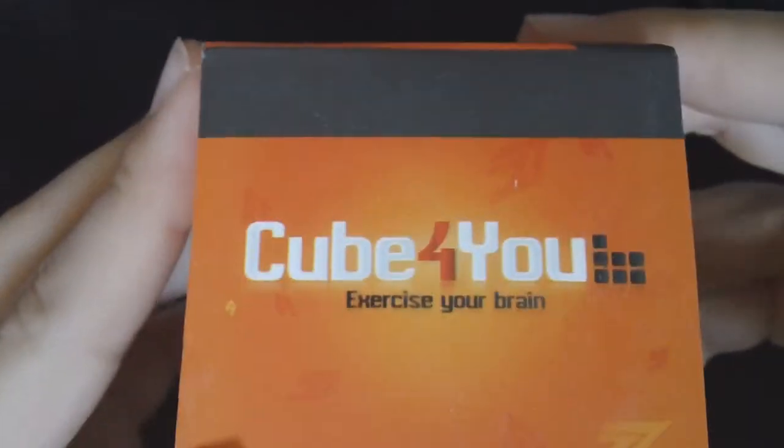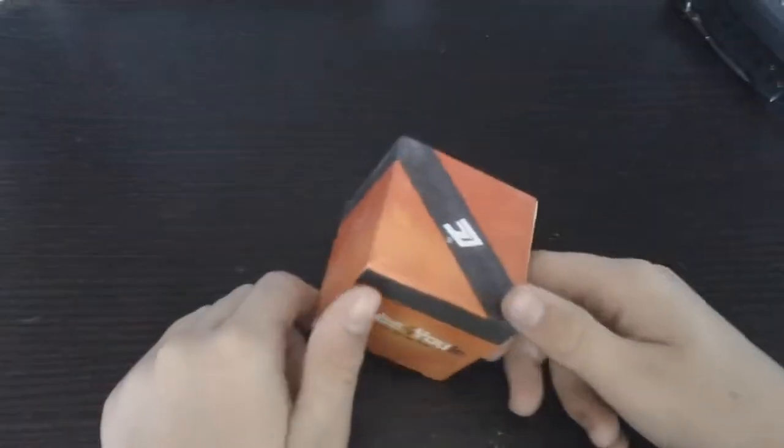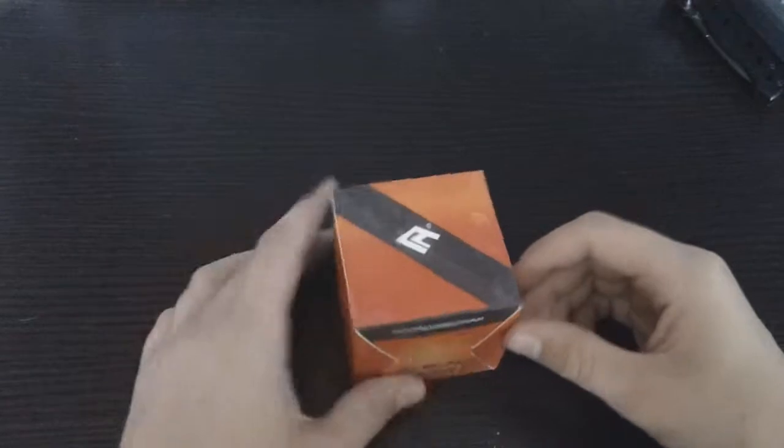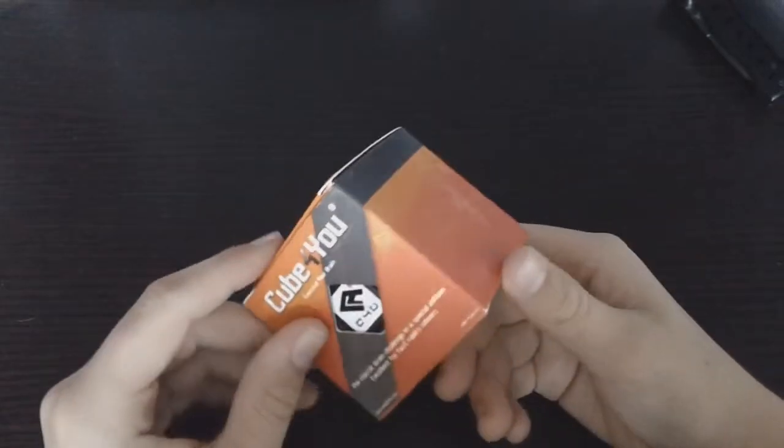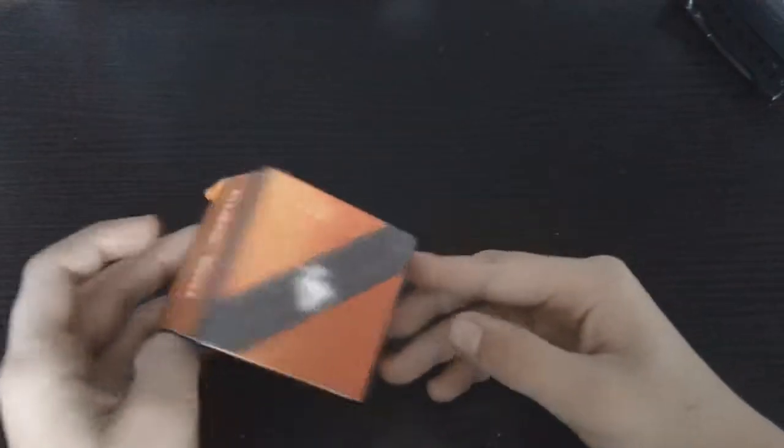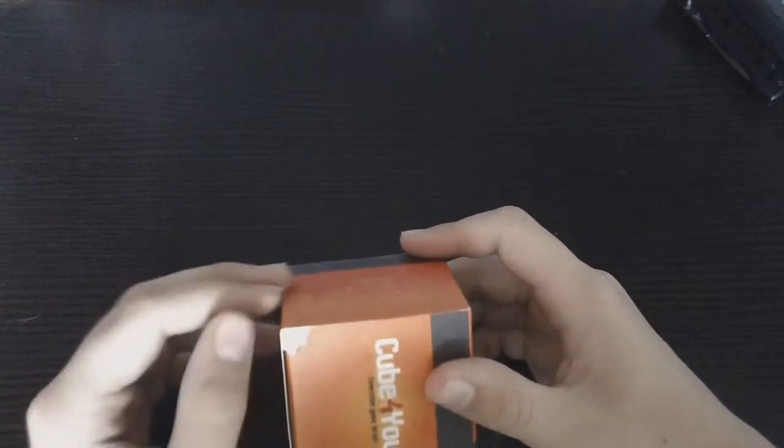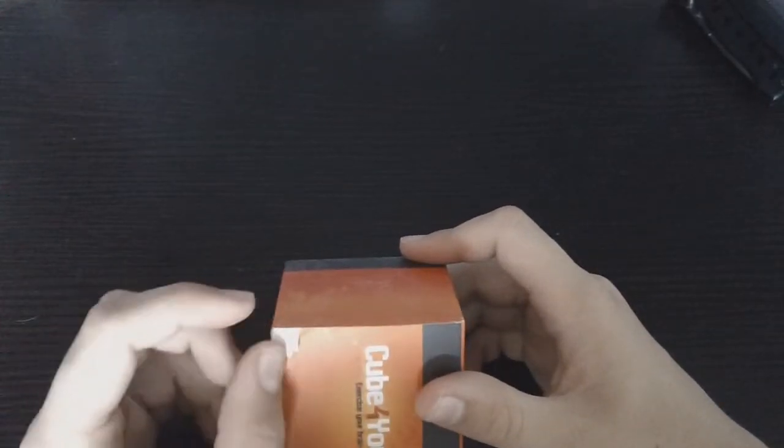First time I've ever ordered a cube for you cube, and first time I've ever ordered from a speedcubing store. They come out of Naperville, Illinois, and I live in Aurora, Illinois, kind of like on the brink of Aurora. I ordered it like Sunday night, and I got it today, which is Tuesday, I got it Tuesday morning. So, it's very fast, I got it in two days.